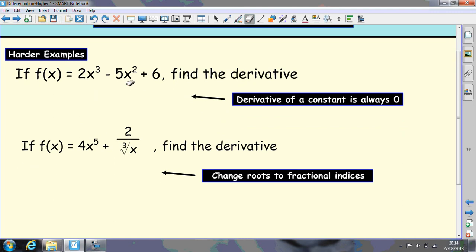Some more examples here. If we want to differentiate this function, differentiate each bit individually. So we'll start with the 2x cubed. Multiply down by 3 and reduce it by 1, which gives you 6x squared. Multiply down by the 2, reduce it by 1 which gives you negative 10x. And differentiate the 6 to get 0. You wouldn't normally put the 0 in, you would just leave your answer as f dash of x equals 6x squared take away 10x.